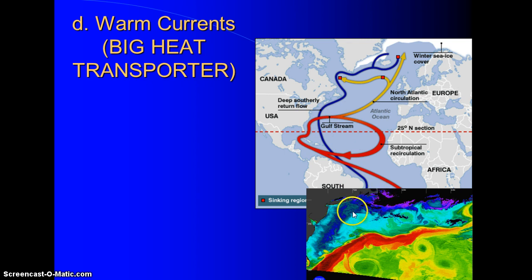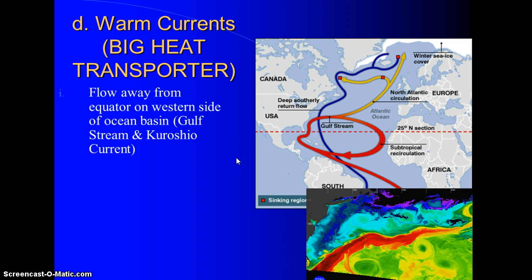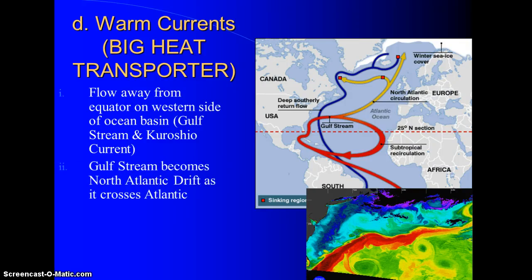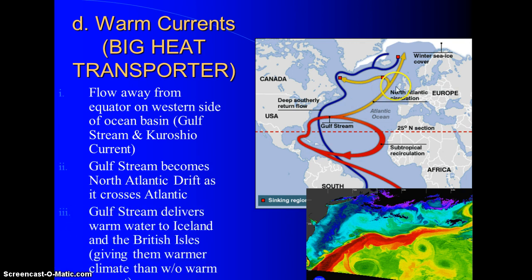This is the Labrador cold current coming down — fogs are produced where the two meet. Warm currents flow away from the equator, picking up energy and flowing along the west side of the ocean basin, whether in the southern or northern hemisphere — warm currents are always west, WW. The Gulf Stream turns into the North Atlantic Drift as it crosses the Atlantic, delivering warm water to Iceland and the British Isles, giving them a warmer climate.